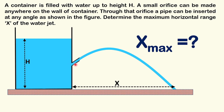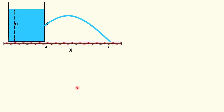So we are changing both of these two things and we have to determine the maximum value of x. If you haven't tried this question, you should stop and give it a try. In the solution, we have to vary two things: the angle of the pipe, and the depth of the orifice from the surface. Let's say we get the maximum range at some particular depth — call this depth small h from the surface. So this lower portion becomes capital H minus small h.